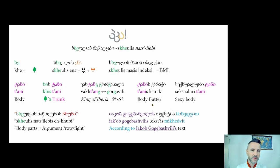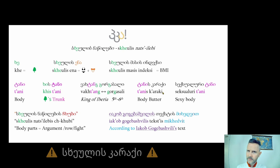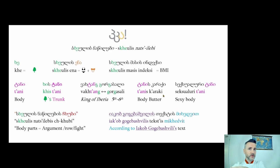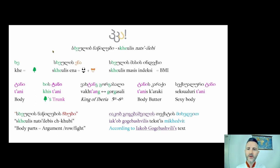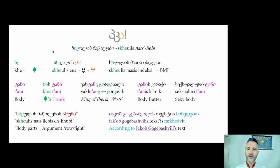Body butter — if you go to the UK you know what this is. 'Sxeulis karaki' sounds creepy; 'tanis karaki' is the aesthetic product, it smells nice, you buy it in a beauty shop. Similarly, 'hot body' — a nice, fit, healthy person — would use 'tani.' You wouldn't say 'sxeuli sxeuli' — that gets into the creepy zone, almost like you're in a morgue looking at something anatomically.